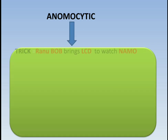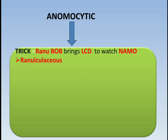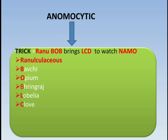Third is anomocytic stomata. The trick is 'Ranu bob brings LCD to watch namu.' Ranu denotes ranunculaceous family, B denotes Bacopa, O denotes opium, again B denotes bhringraj, LCD — L denotes lobelia, C denotes clove, D denotes digitalis — and fennel. The word 'namu' resembles anomocytic.